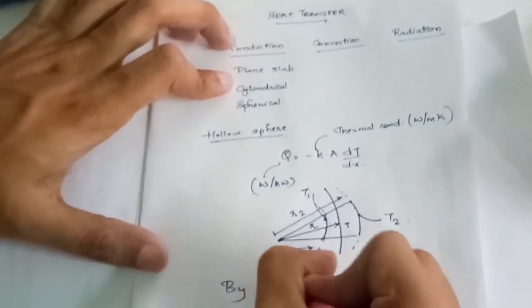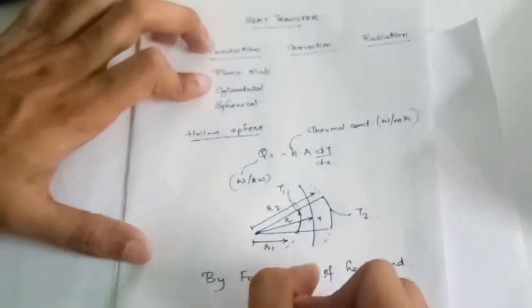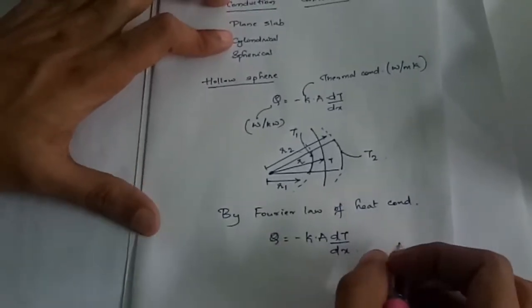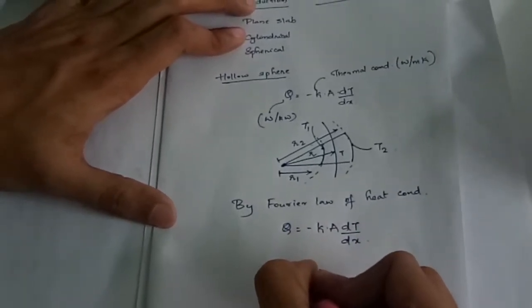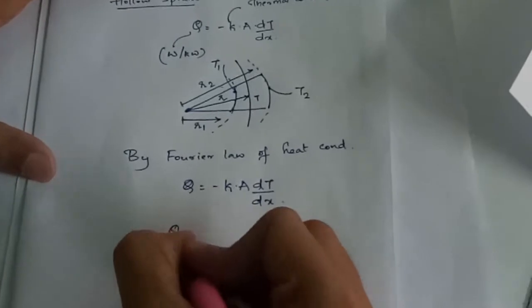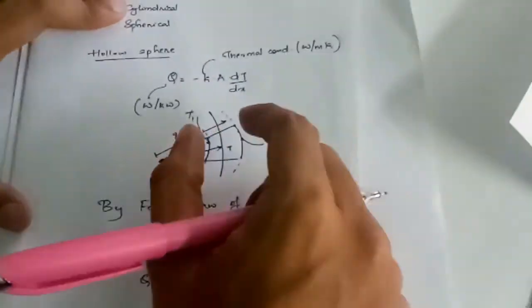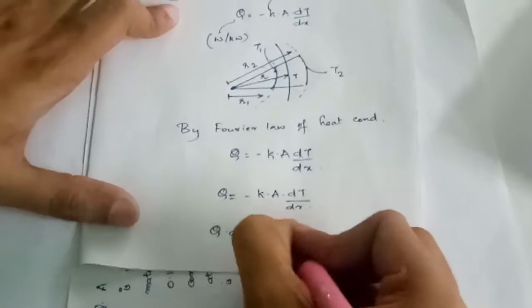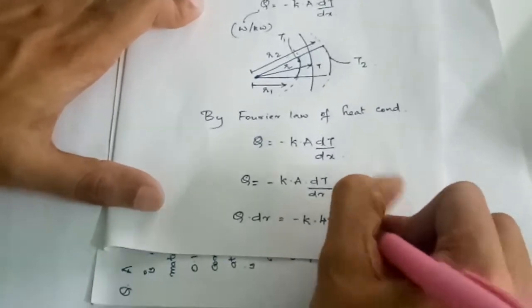We apply the Fourier law of heat conduction: Q = -k · A · dT/dr. Since we have thickness in the radial direction, dx is replaced by dr. Rewriting: Q · dr = -k · A(sphere) · dT, where the area of a sphere is 4πr². So Q · dr = -k · 4πr² · dT.